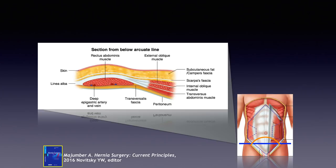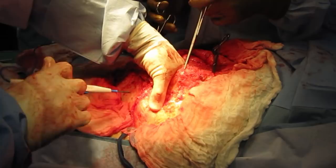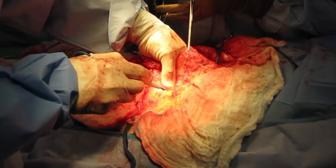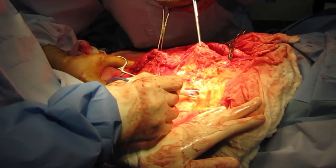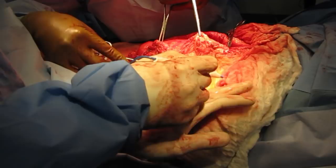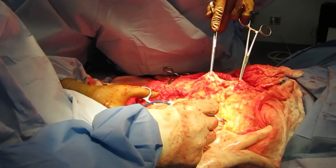This is the only video where I'm going to show external oblique release. When you do external oblique release, after raising the flaps, what we look for is the linea semilunaris — the surgeon has the rectus abdominis muscle in his left hand and is feeling for the lateral border. We step about two to two and a half centimeters away from the linea semilunaris and make the incision in the external oblique aponeurosis — actually dividing the external oblique muscle — to create the anterior component separation. Deeper inside, you'll then see the internal oblique muscle.